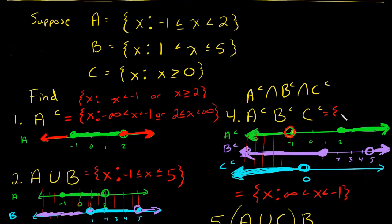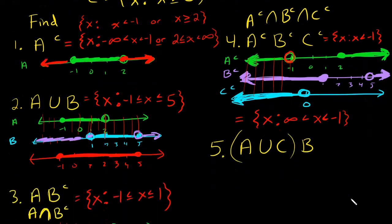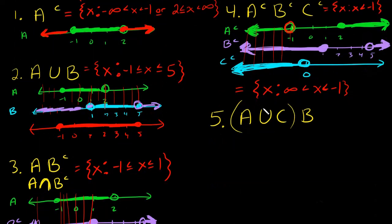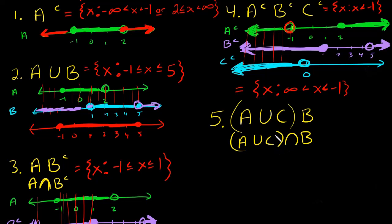So the answer is X such that X is less than negative 1. That's the same thing as writing the interval from negative infinity to negative 1. Now for part 5: A union C, intersect B. This means start with what's inside the parentheses first — figure out A union C.